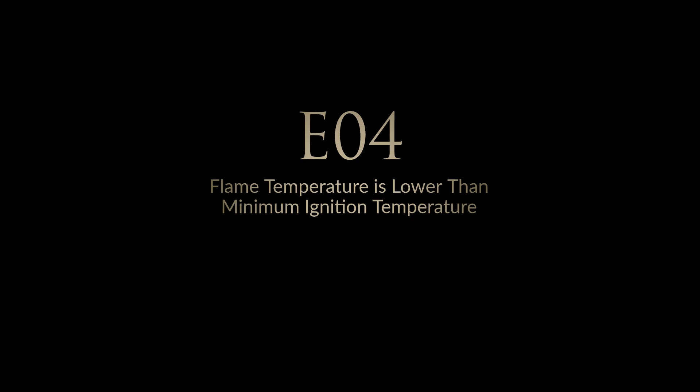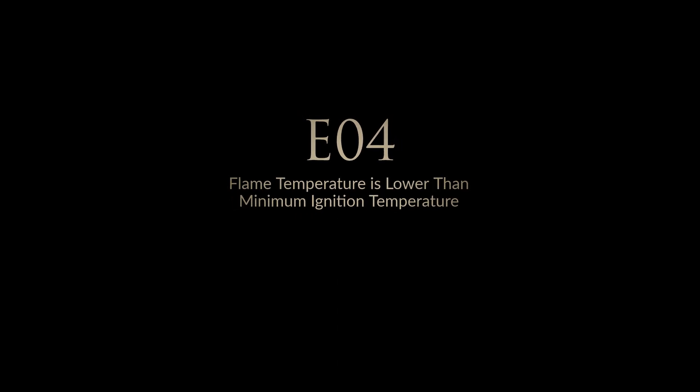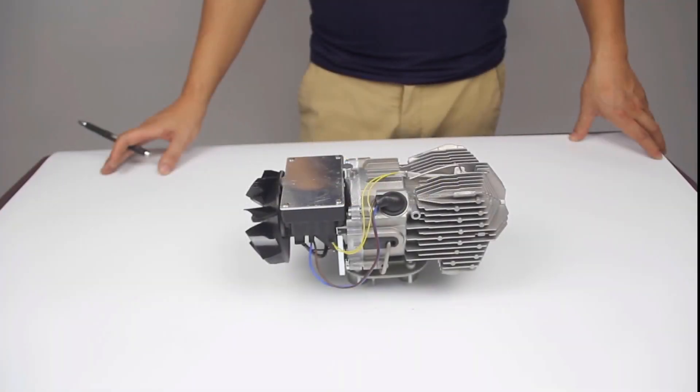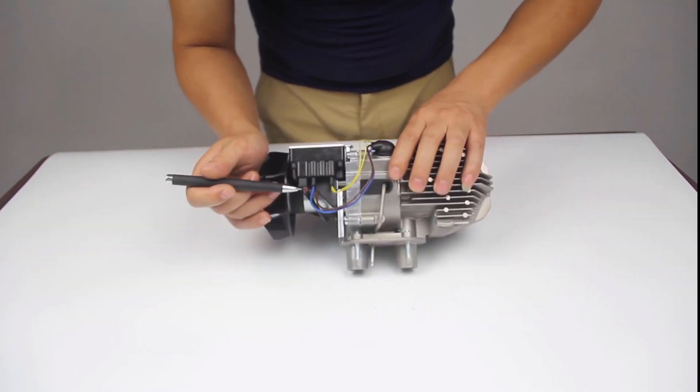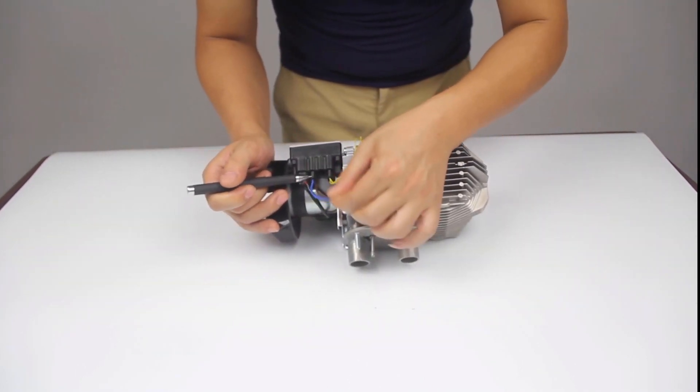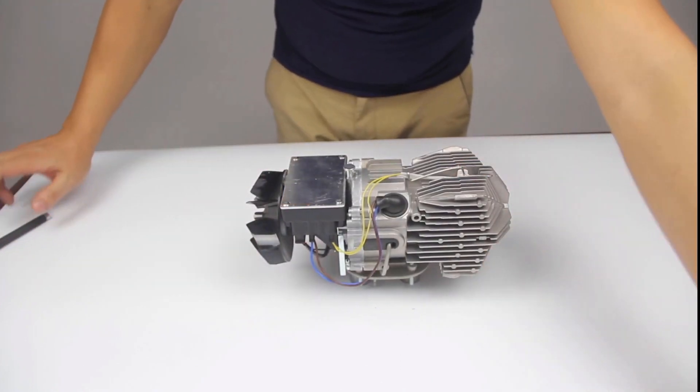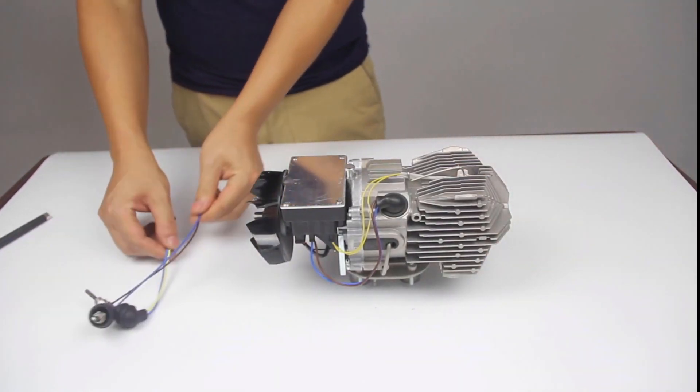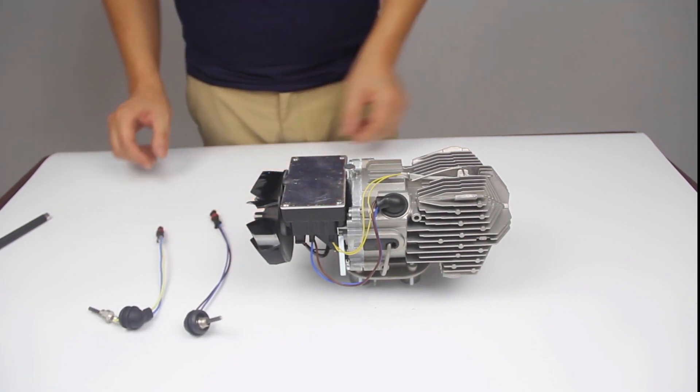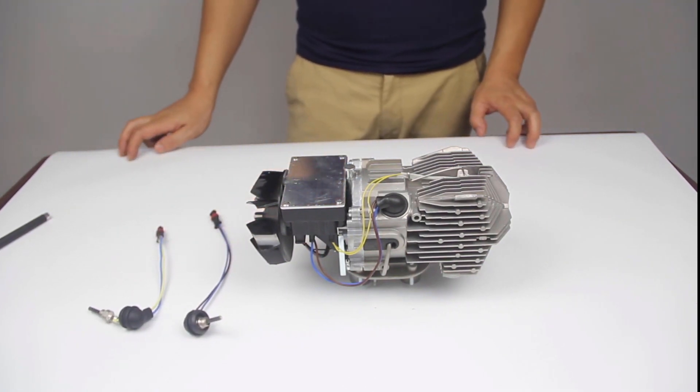Error code 4, the flame temperature is lower than the minimum ignition temperature. We need to check two places. First, examine the glow plug wires, making sure the glow plug is firmly plugged in. Second, the power voltage is too low going to the glow plug. Make sure there is adequate voltage for the right unit. Amperage is important as well. Make sure your power supply is healthy and running at its optimum performance.